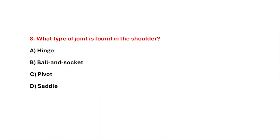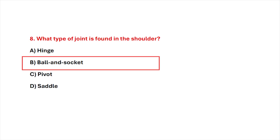Q8. What type of joint is found in the shoulder? Correct answer is option B, ball and socket.